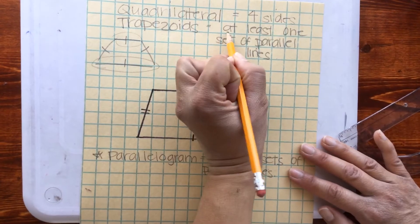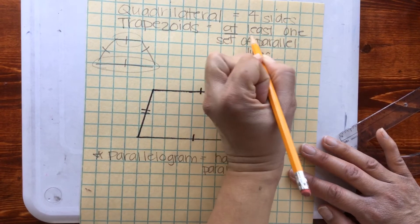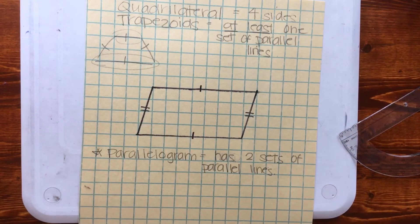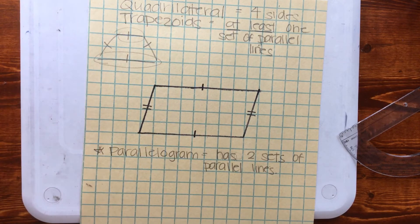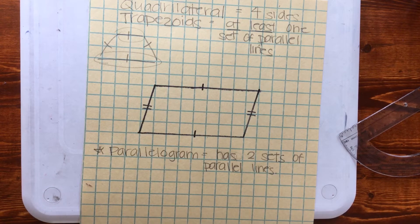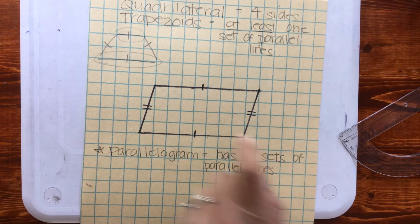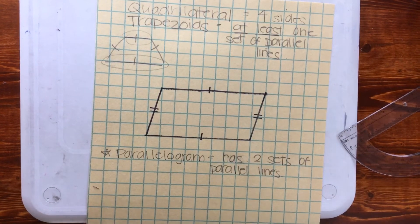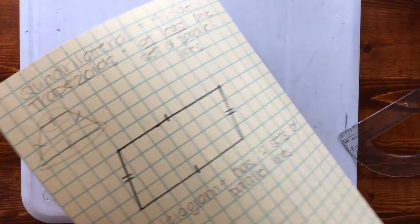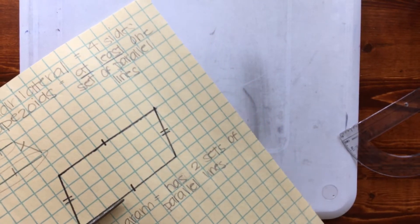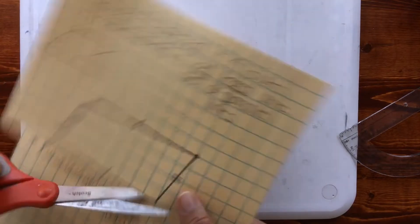We have some really good wording here. Trapezoids have at least one set of parallel lines. So parallelograms are all trapezoids, but only some trapezoids can be considered parallelograms. Here we have our parallelogram drawn, and what I'm going to do next is cut out my parallelogram.